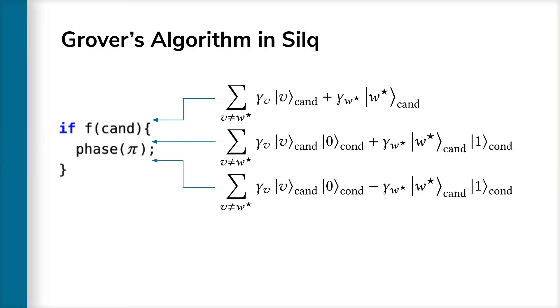Now, because phase of pi flips the sign of coefficients, the conditional phase of pi flips the sign of coefficients where the condition is true, resulting in the third state. In a classical language, we would be done now. We could just forget about the temporary value cond and continue with our computation.